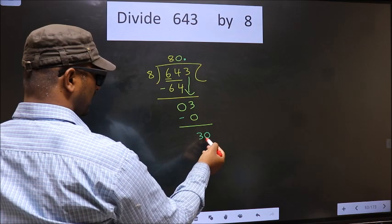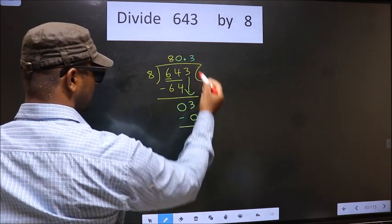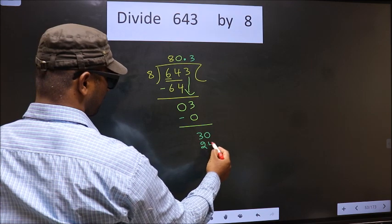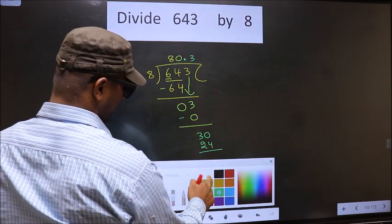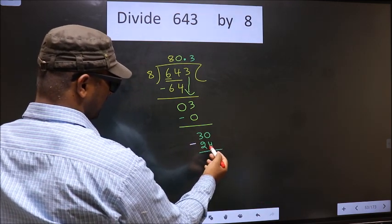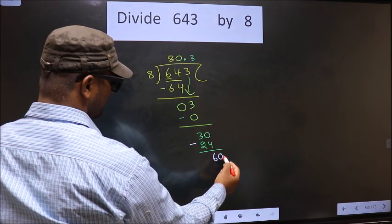Here, 30. A number close to 30 in 8 table is 8 threes, 24. Now, you subtract. 30 minus 24 is 6. You take 0, continue the division.